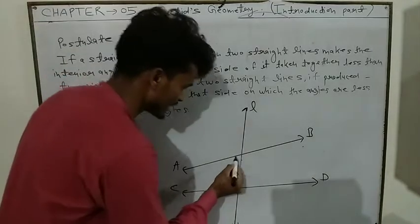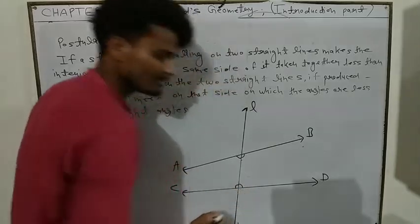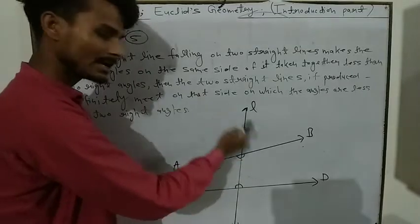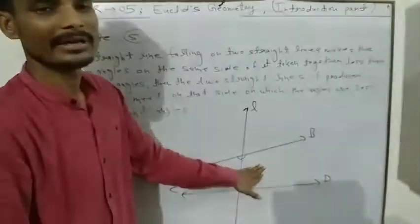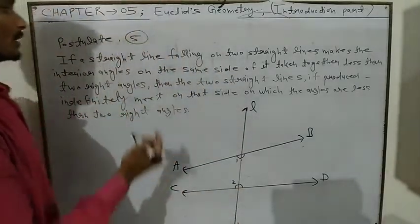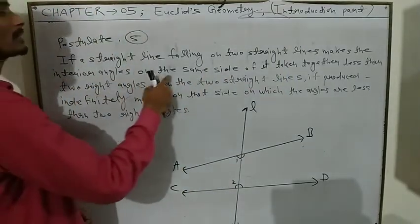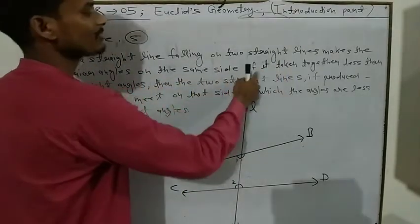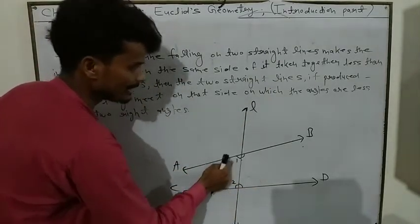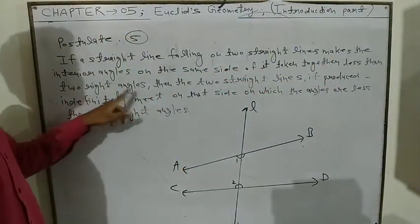So we look at the interior angles on this side. We have a straight line falling on two straight lines, making the interior angles on the same side of it taken together less than two right angles.